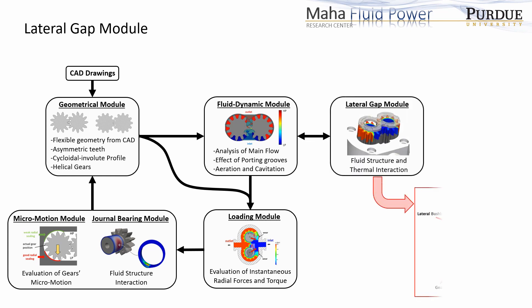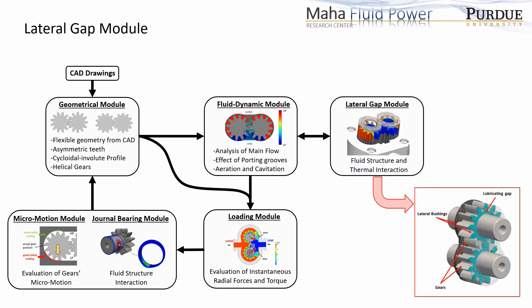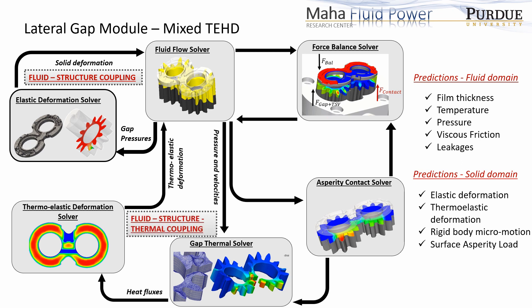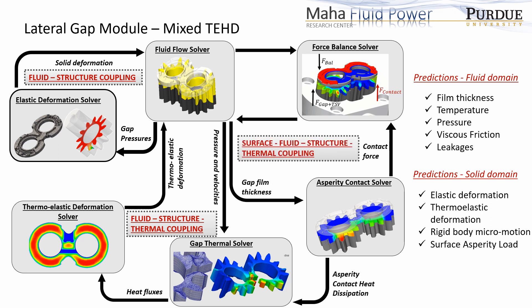For modeling of the axial compensation mechanism realized by bearings or bushings at the lateral gap of external gear machines, HYGsim has a separate module called the lateral gap module. This module consists of six solvers coupled with each other. Fluid-structure coupled solvers determine pressure in the fluid domain and resulting elastic deformation in the solid domain. Fluid-structure-thermal coupled solvers determine temperature in the film and resulting thermo-elastic deformation in the solid domain. Effects of mixed lubrication are included using an asperity contact model. Finally, actual micromotion of the gears and bushings is evaluated using a force balance solver.